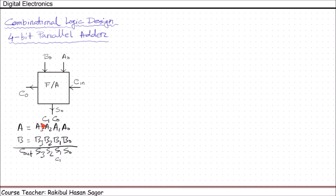C2 will be the carry in for the next adder. So in order to get a 4-bit full adder we need 4 full adders.